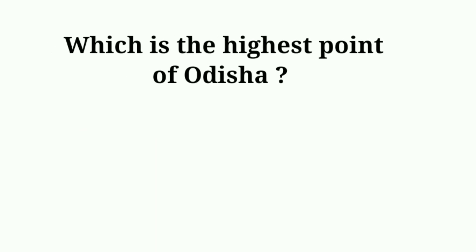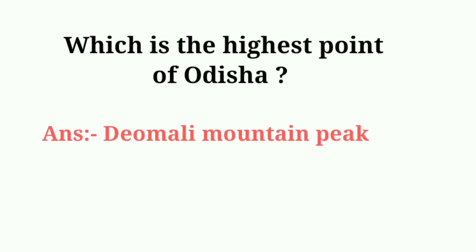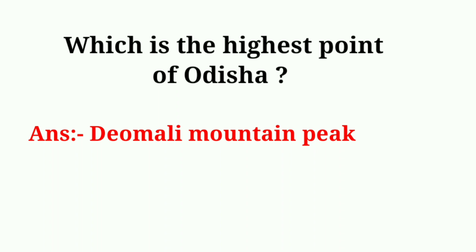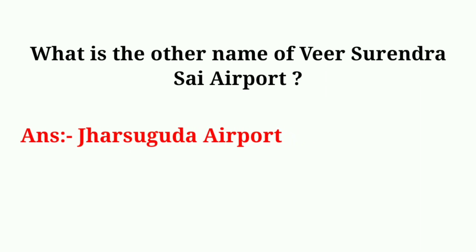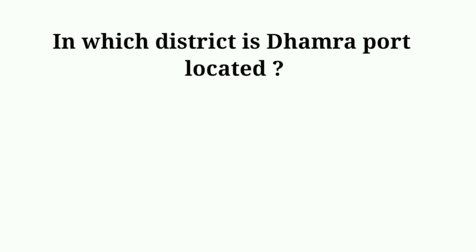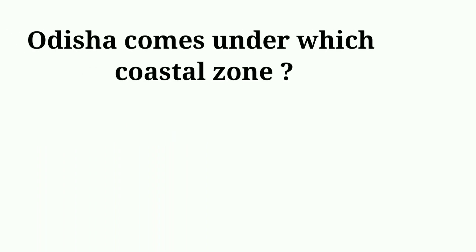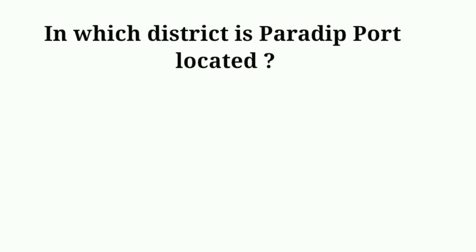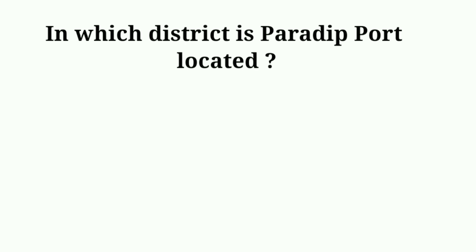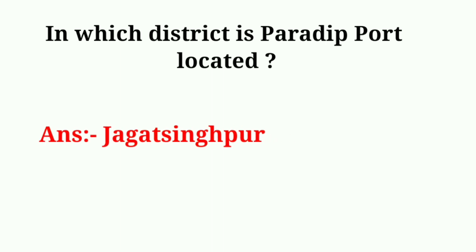Which is the highest point of Odisha? Answer: Deomali mountain peak. What is the other name of Veer Surendra Sai Airport? Answer: Jharsuguda Airport. In which district is Dhamarapod located? Answer: Bhadrak. Odisha comes under which coastal zone? Answer: Utkal coast. In which district is Paradip port located? Answer: Jagatsinghpur.